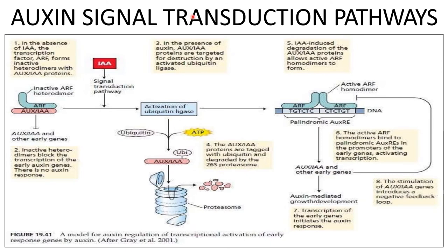Auxin signal transduction pathway: in the absence of auxin, the transcription factor ARF forms an inactive heterodimer with the AUX/IAA protein. This inactive heterodimer blocks the transcription of early auxin genes, so there is no auxin response.